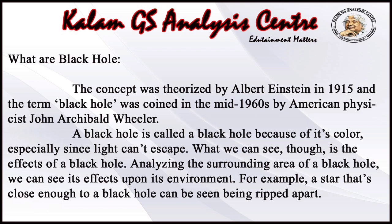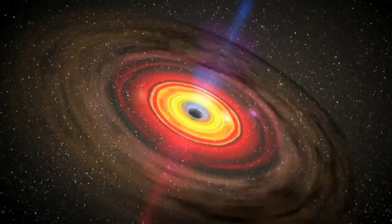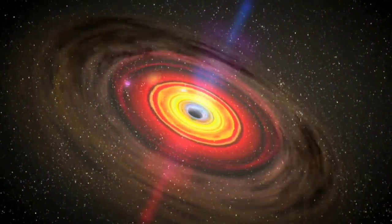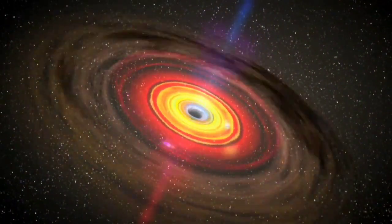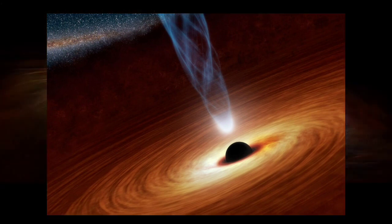एक Black Hole जो उसके रंग के कारण Black Hole कहा जाता है, खासकर जब light इससे बच नहीं सकती। हालांकि हम जो देखते हैं वो Black Hole का effect है। Black Hole के आसपास के क्षेत्र का विश्लेषण करते हुए हम उसके environment पर उसके प्रभाव को देख सकते हैं। उदाहरण के लिए एक तारा जो Black Hole के काफी करीब है उसे चीरते हुए देखा जा सकता है।